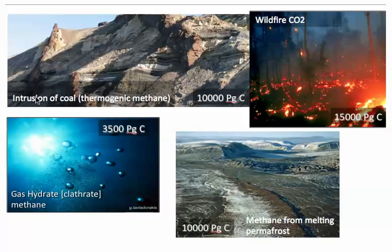The second mechanism is the intrusion of coals via dikes and sills upon the rifting of the North Atlantic Igneous Province. These coals and intrusions are found next to one another in places such as Greenland and Norway. Intrusion of the coal via hot material could deliver a lot of methane to the atmosphere.